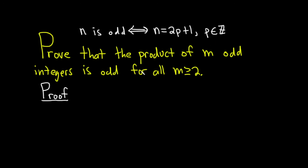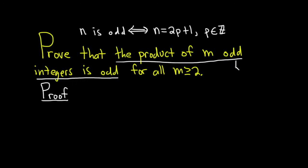This is an induction proof, and so our statement that we're trying to prove is this one here: the product of m odd integers is odd. I've underlined it and I'm going to call that S_m. This whole thing that's underlined is our statement, and we're trying to show that it's true for all m greater than or equal to 2.